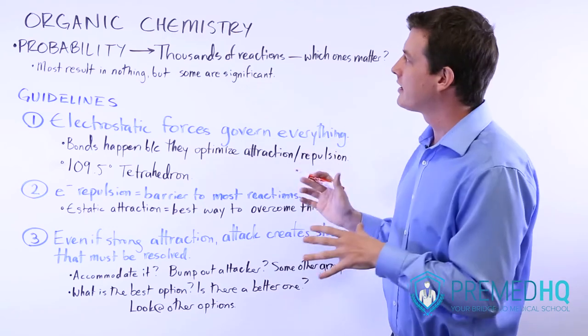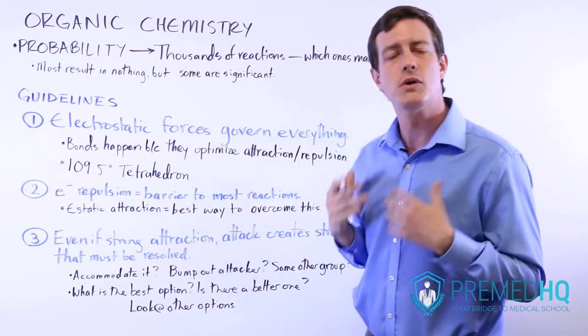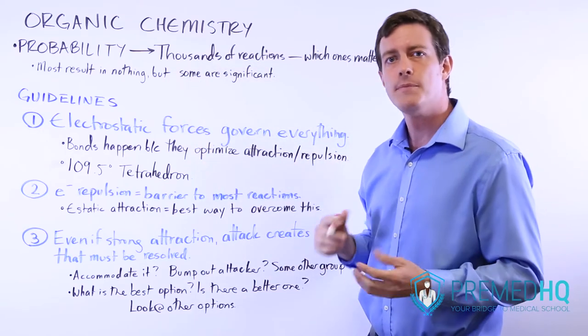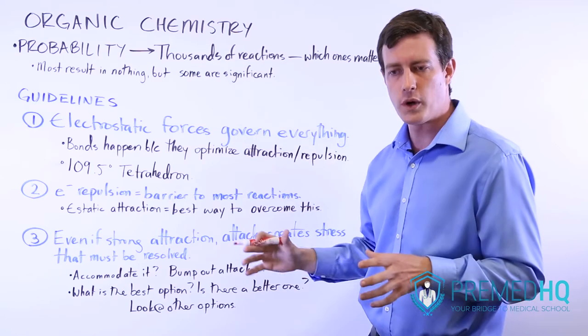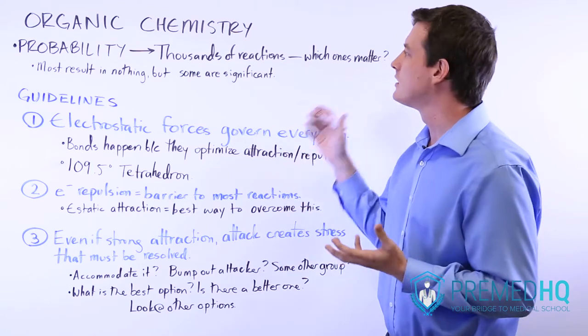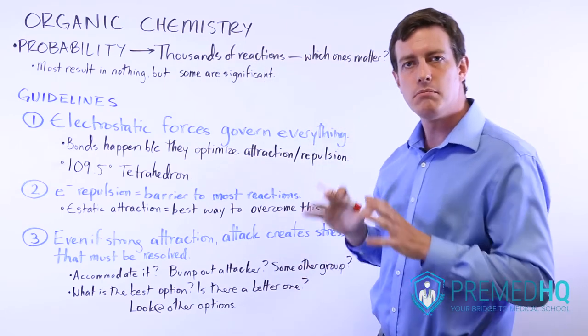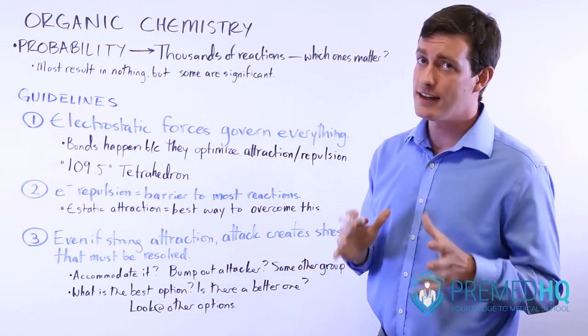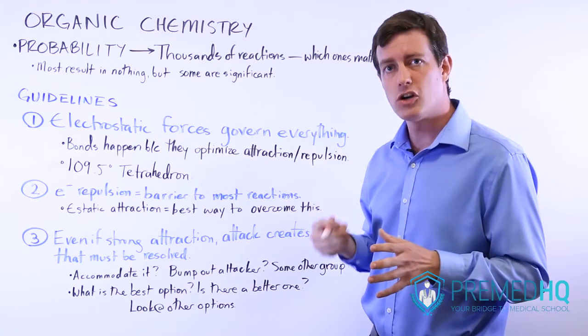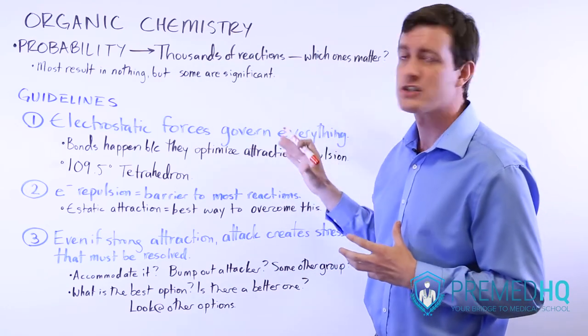For an organic chemist, your job is to figure out what is the most probable thing to occur. If you put all these things together and they're interacting in certain ways, what is most likely to be the reaction that actually matters, that persists and continues? Most reactions result in nothing, but a few reactions occur with great regularity, and organic chemistry is all about understanding that.